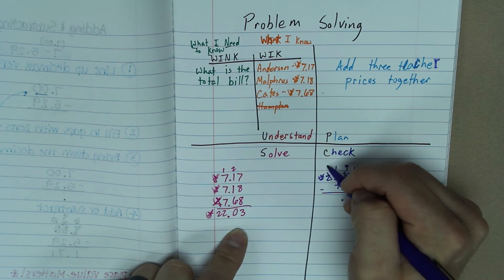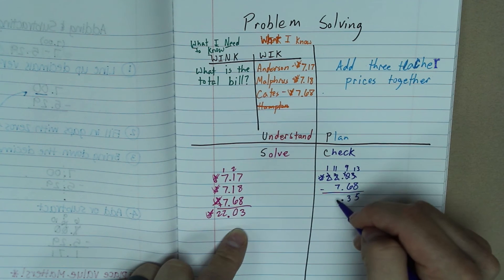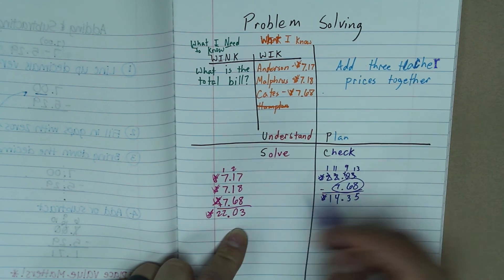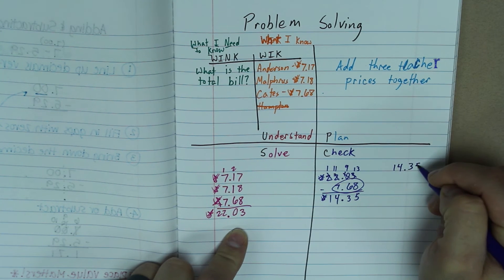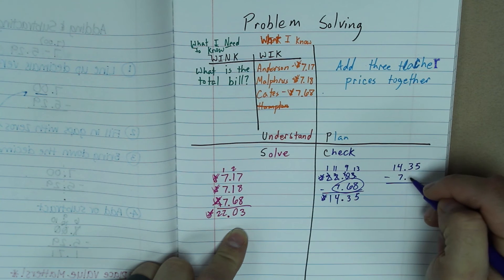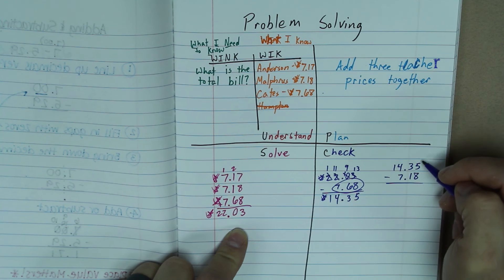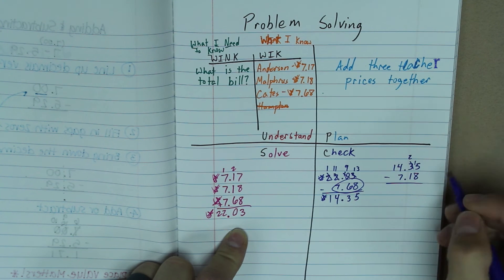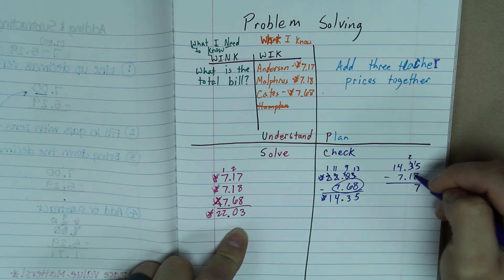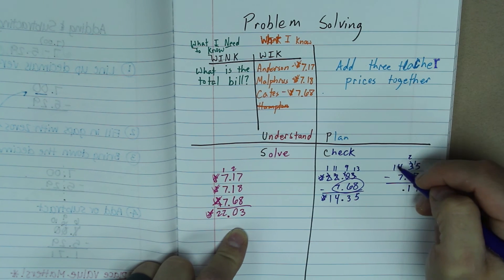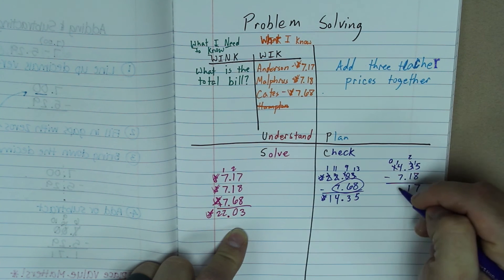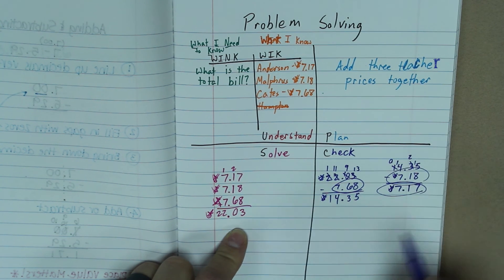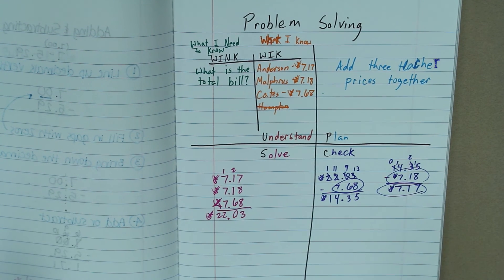And then 1 minus nothing is 1. So we have $14.35. And that is 1 of these times. So now I'm going to do $14.35 minus $7.18. That's the next one. 5 minus 8. We can't do that. So we have to regroup. We're going to go to the 10th place. That's now 2. This becomes a 15. 15 minus 8 is going to be 7. 2 minus 1 is 1. Bring down the decimal. 4. We have to regroup. This becomes 14. 14 minus 7 is 7. So we have $7.17. So we have this price for mine, this price for Ms. Malfrey's, and this price for Ms. Cates. It all worked out. And that's how we do problem solving.